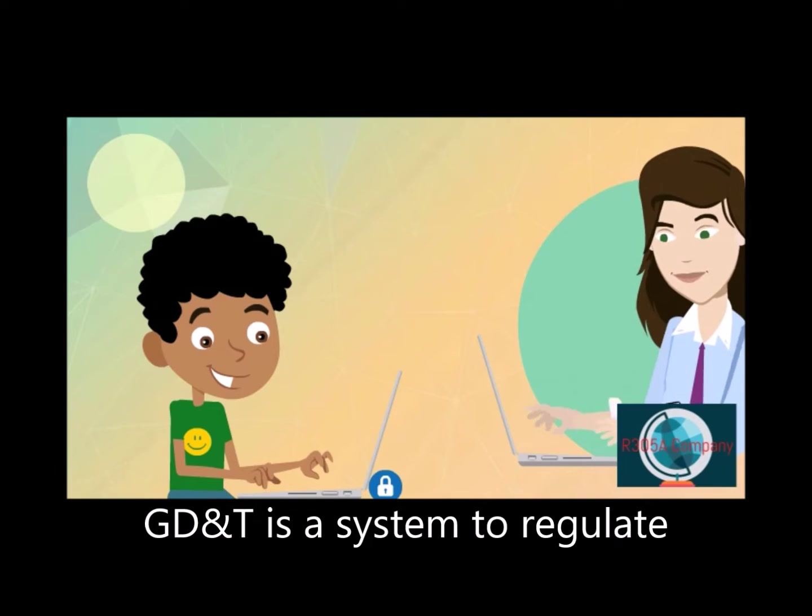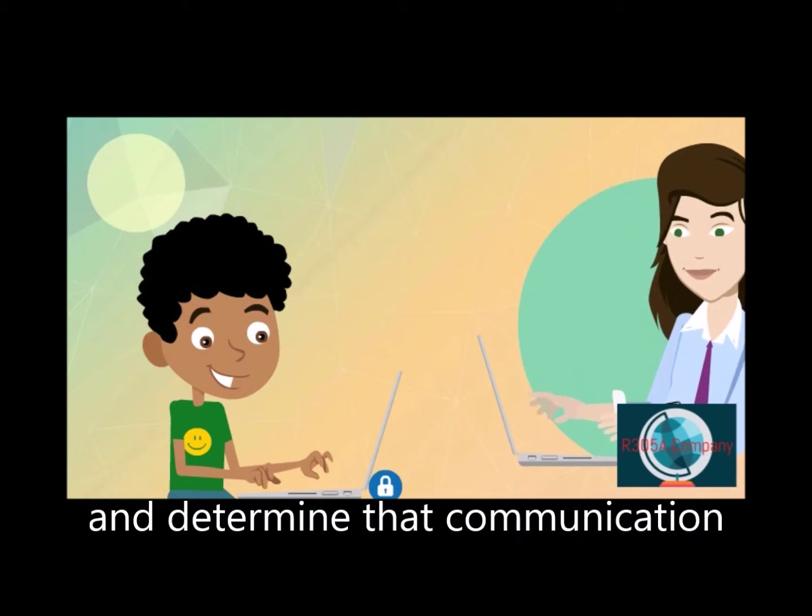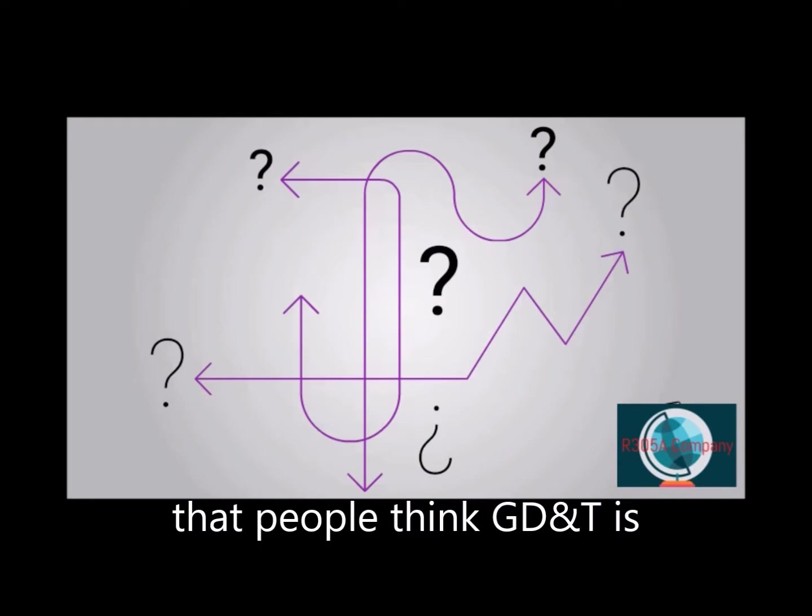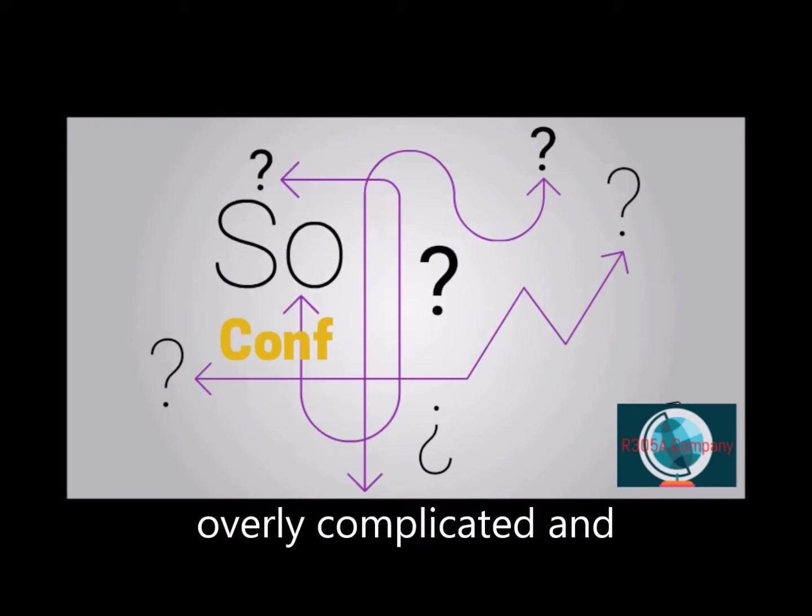GD&T is a system to regulate and determine that communication. One of the biggest problems is that people think that GD&T is overly complicated and hard to learn.